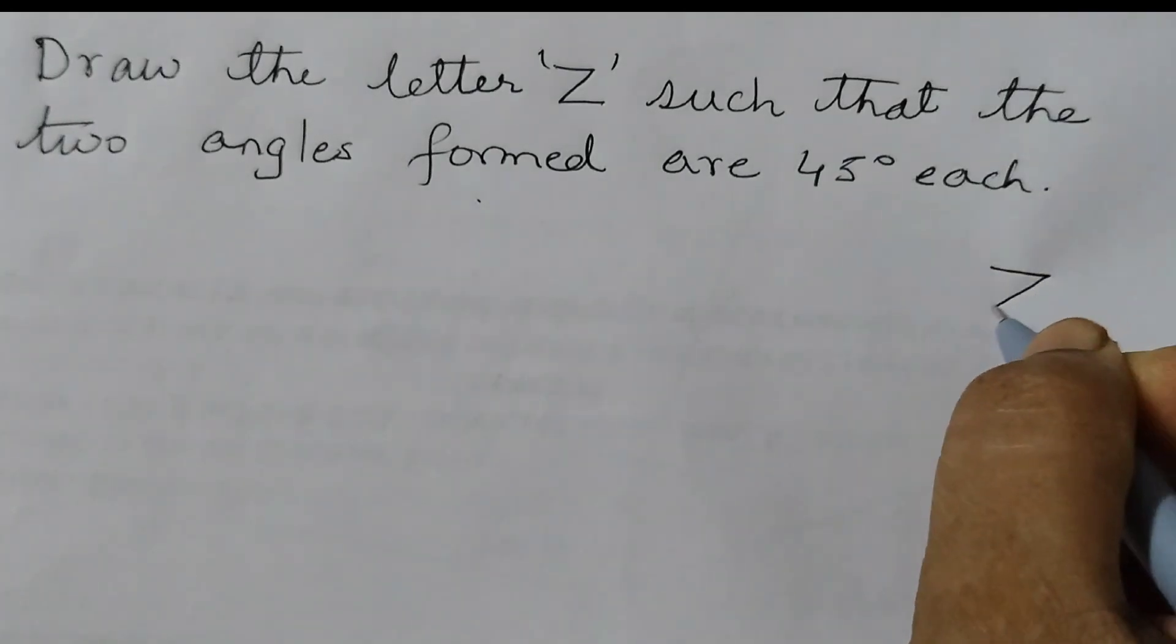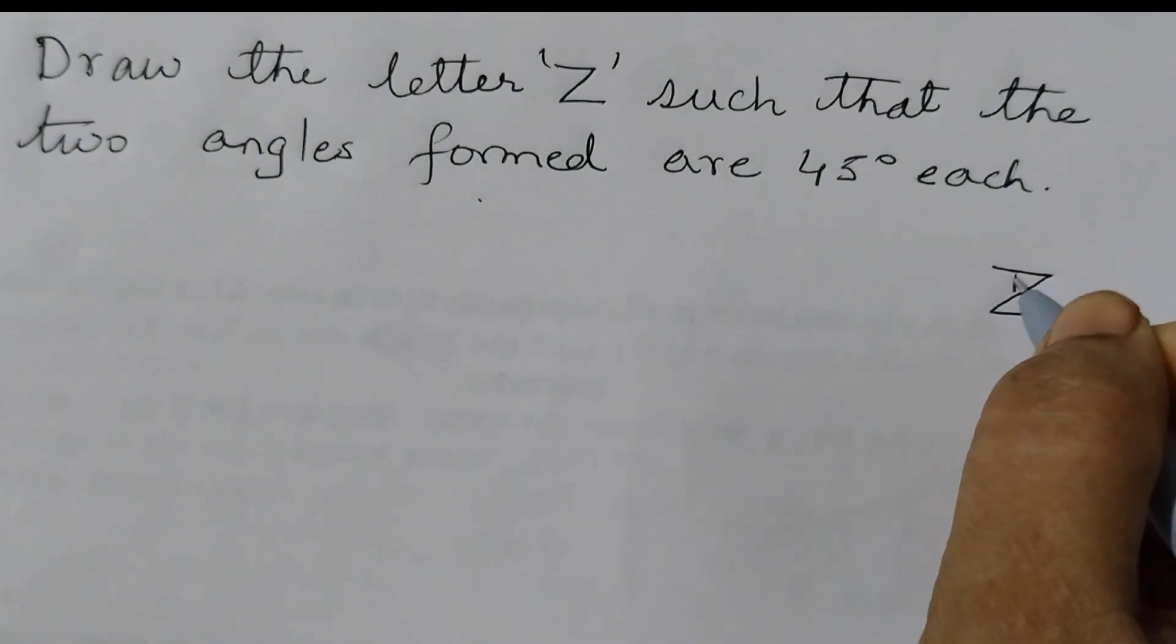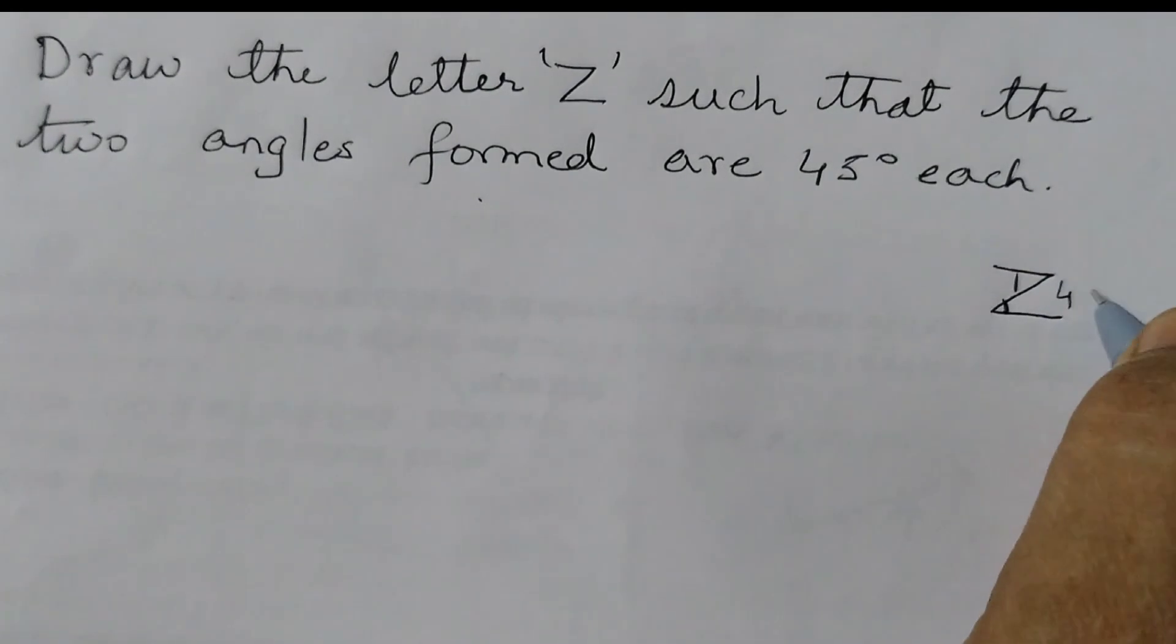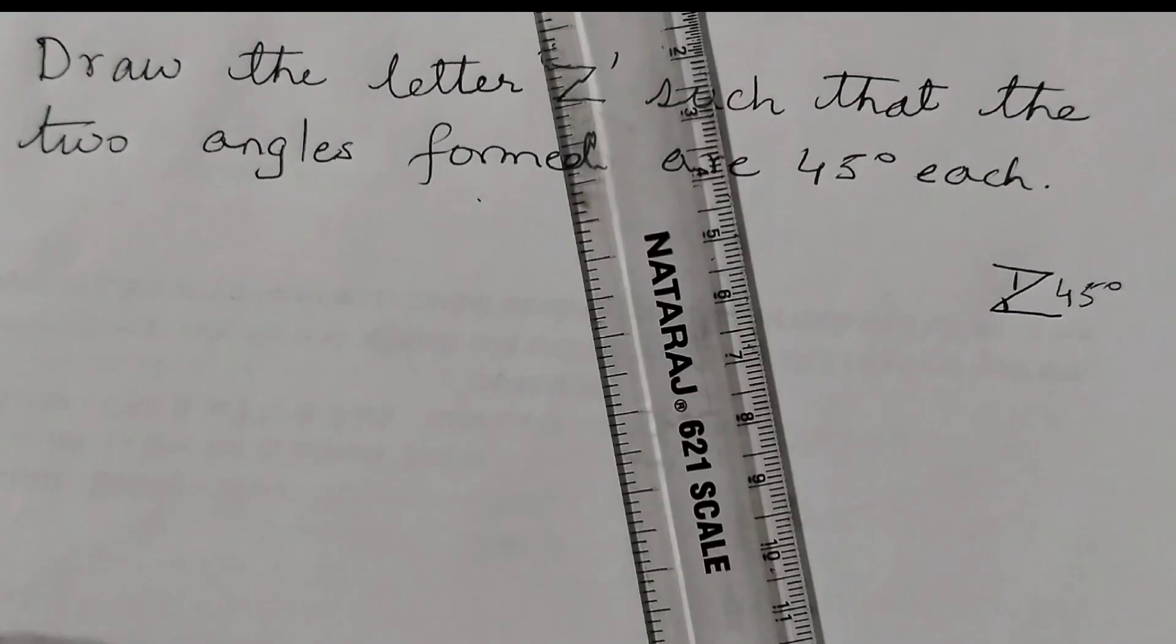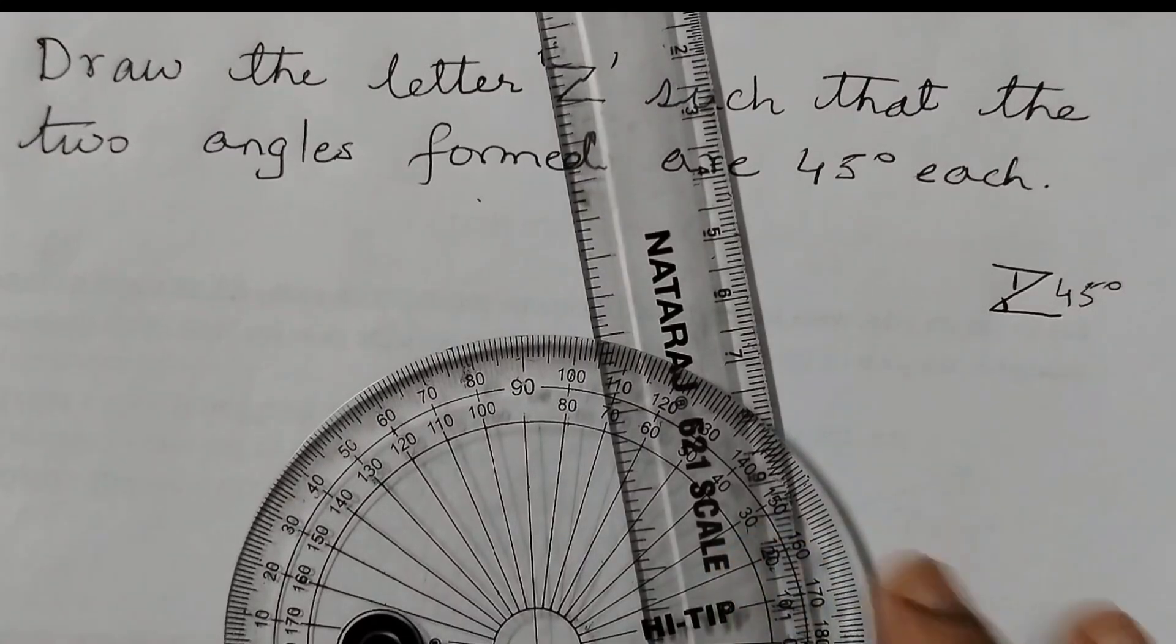We know the letter Z looks like this, right? So this angle here and this angle here needs to be 45 degrees. And this is what we are going to draw. So for this we need a ruler and a protractor.